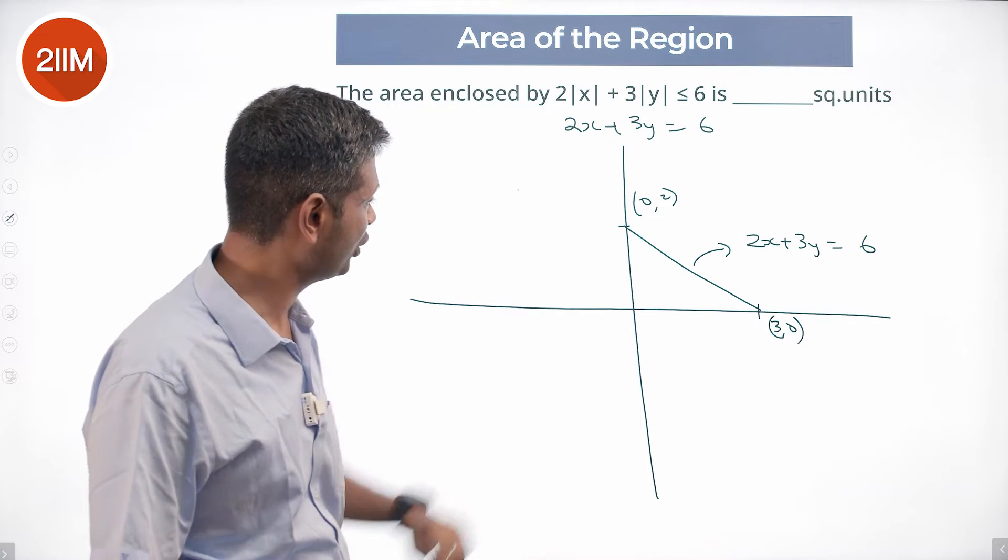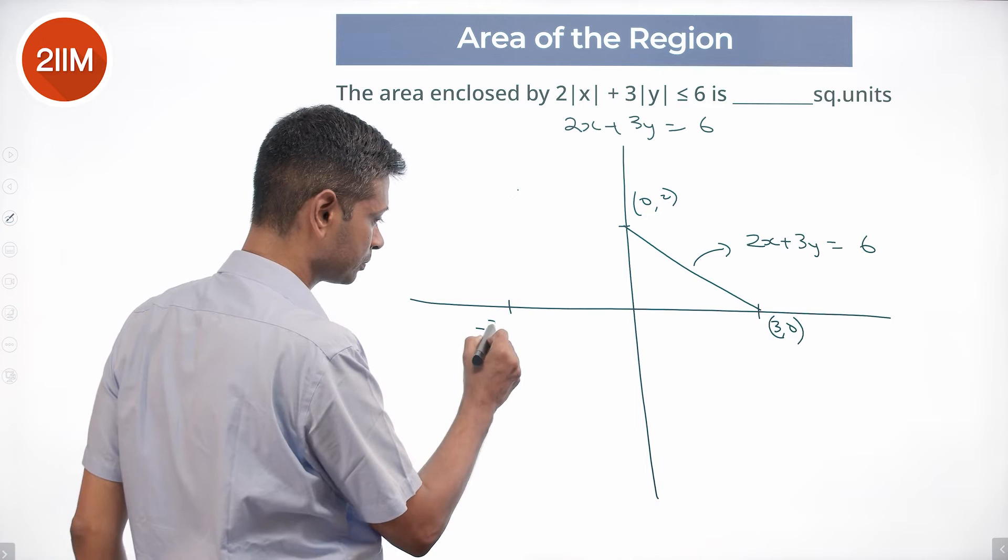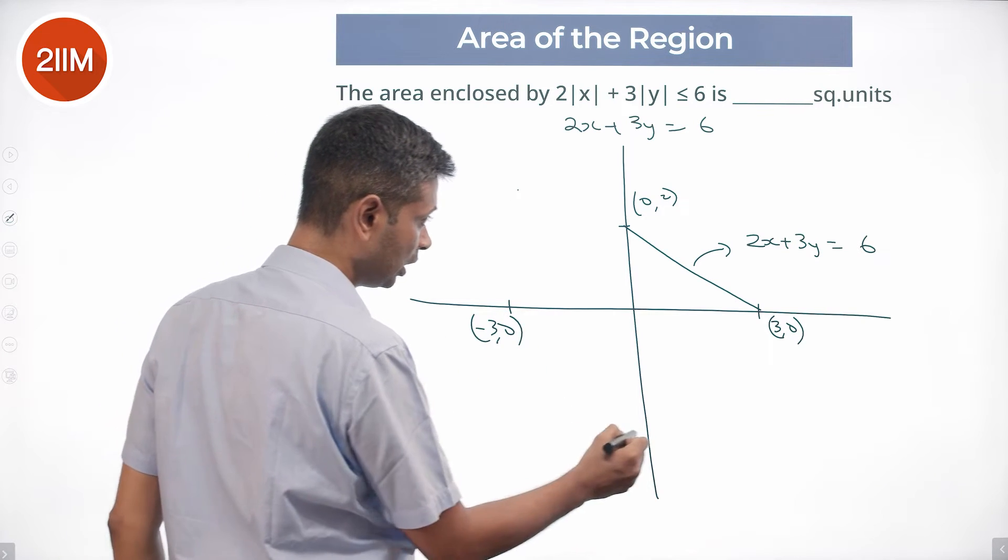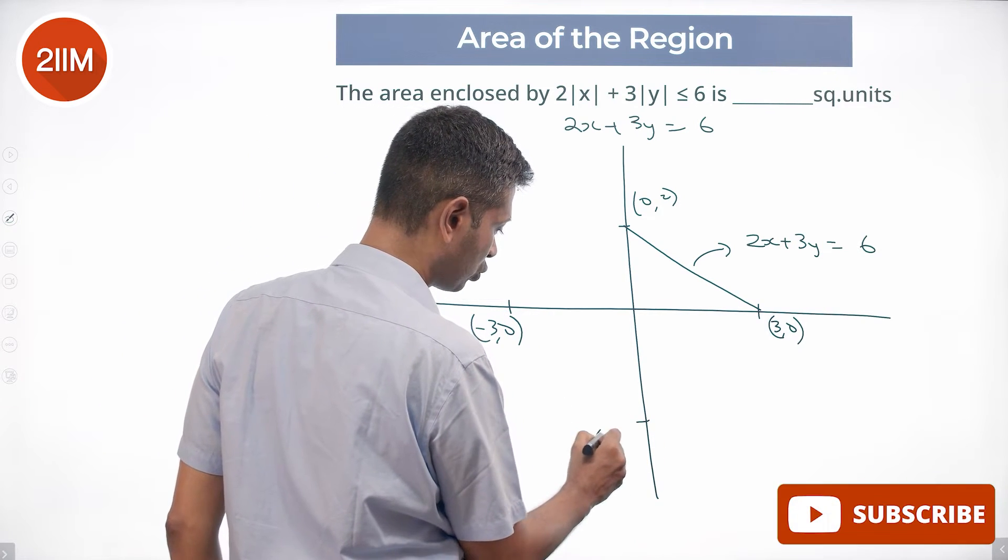So if I put x is minus 3 also, it should work. If we put 0 comma minus 2 also, it should work.